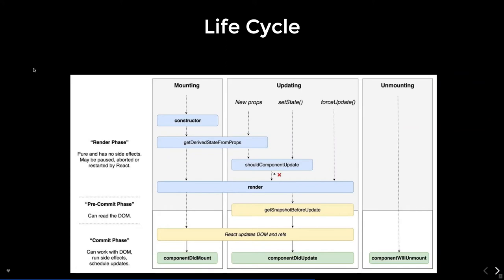The diagram talks about the new set of lifecycle methods we are going to use, divided into three parts: mount, update, and unmount — and there may be error handling as well. In the mounting phase, we have removed componentWillMount, componentWillUpdate, and componentWillReceiveProps. If you remove these three methods and add getDerivedStateFromProps before render, we have: constructor, getDerivedStateFromProps, render, and componentDidMount. This is the lifecycle phase for initial rendering.